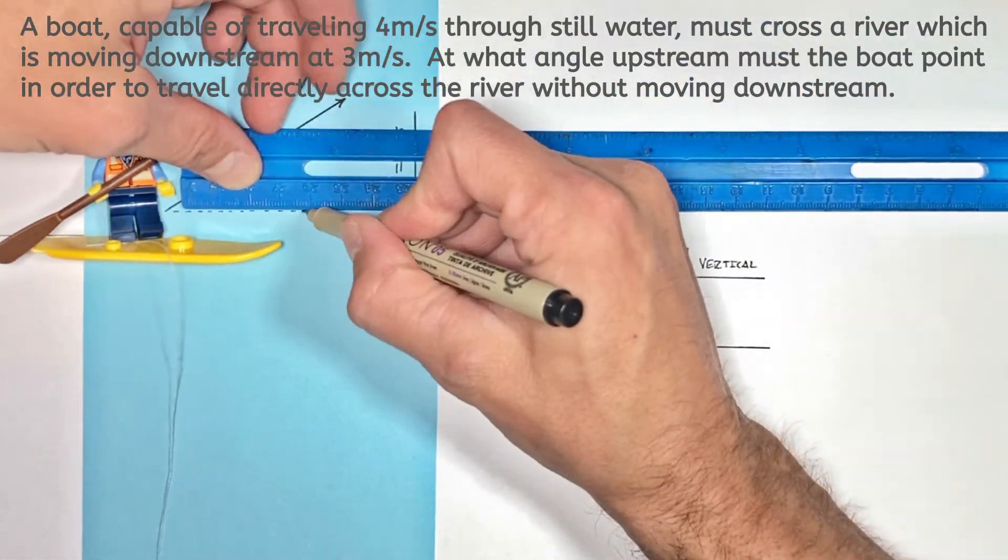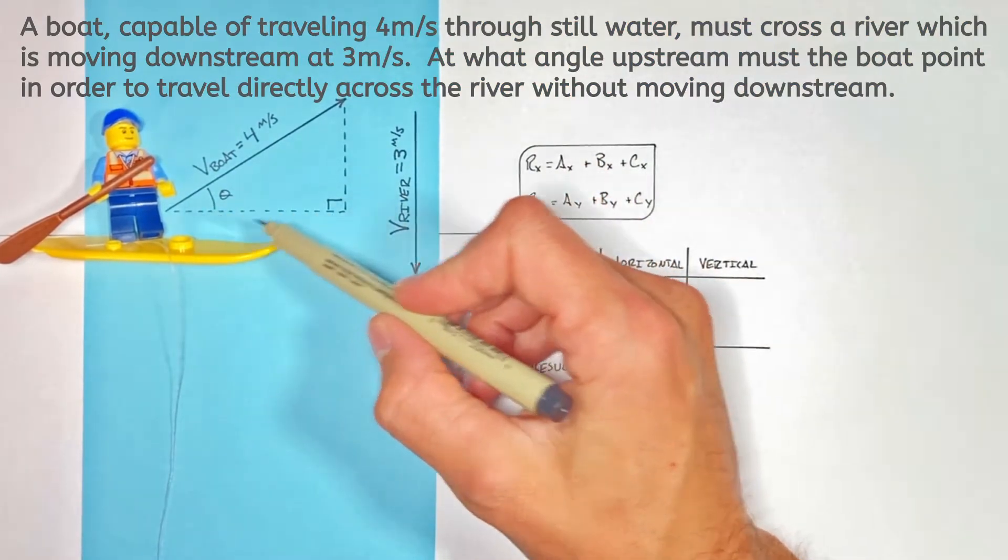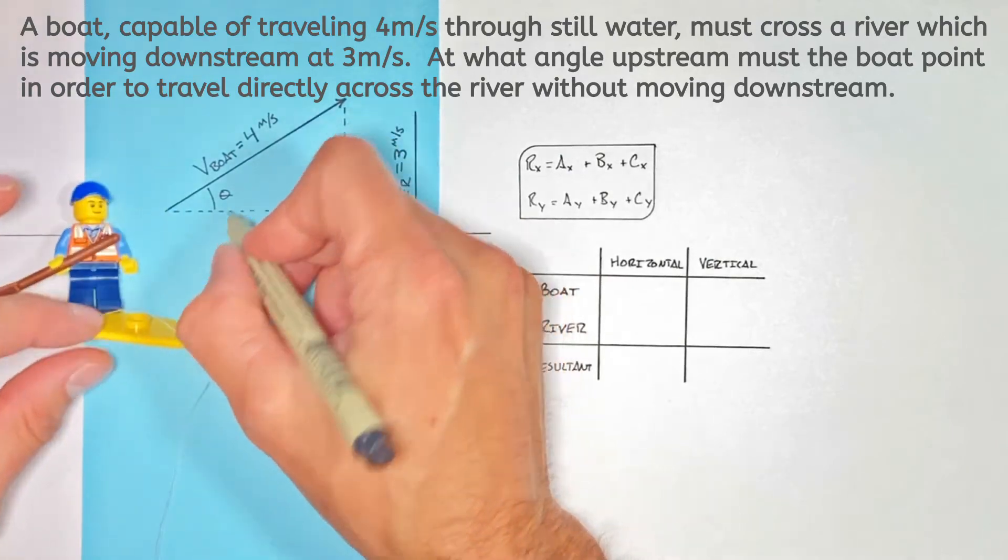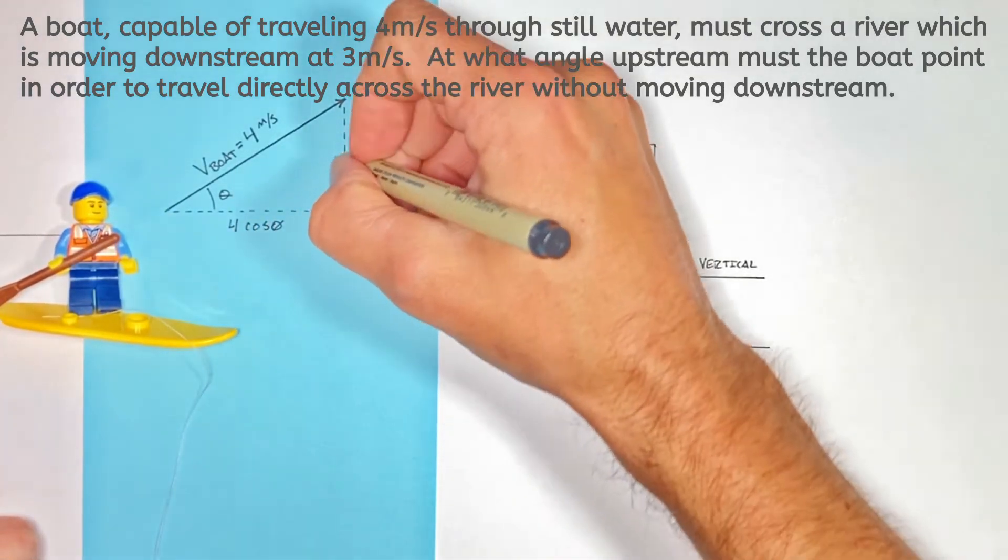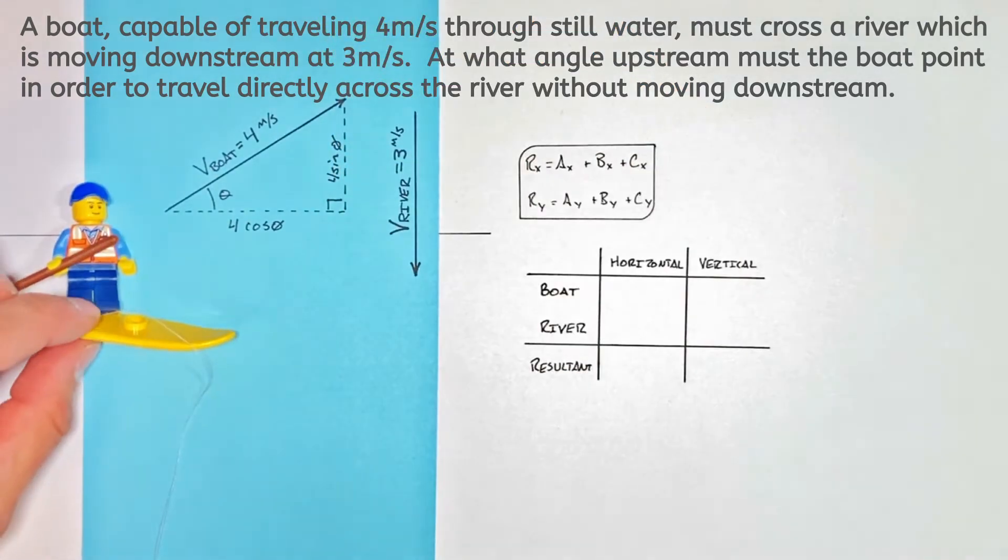Now, if we look at this vector as though it's a right triangle, you'll see this velocity vector has both a horizontal and vertical component. Using some right triangle trig on this, you see the horizontal component is 4cosθ because it's the adjacent side, and the vertical component is 4sinθ because it's the opposite side.